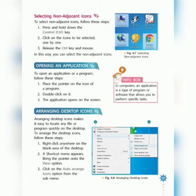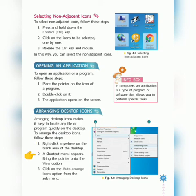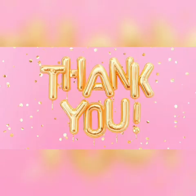The next topic is arranging desktop icons. Arranging desktop icons means changing the placement of icons, which makes it easy to locate any file or program quickly on the desktop. To arrange desktop icons: right-click anywhere on the blank area of the desktop; a shortcut menu appears — bring the pointer to the View option; then click on the Auto Arrange Icons option from the sub-menu, as shown in figure 4.8.